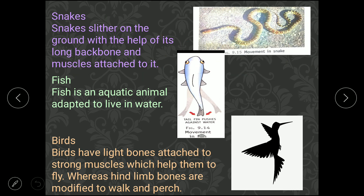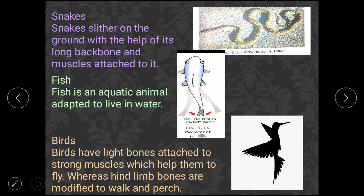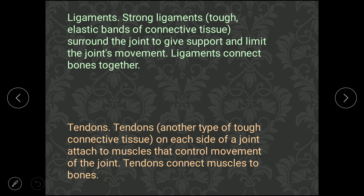Fish move with the help of fins — the tail fin moves this side and that side, pushing through water so they can swim faster. Birds have hollow, lightweight bones with very strong muscles that allow them to fly. Birds also use their limbs — they can fly and walk.